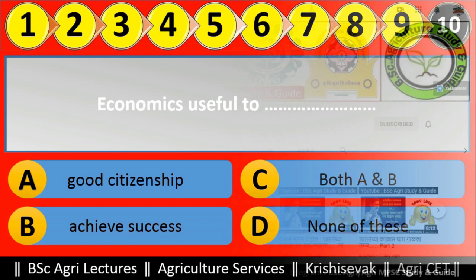Question number tenth and last: Economics is useful to dash dash. Options are: good citizenship, achieve success, both A and B, none of these. Economics is useful to good citizenship and also to achieve success. Hence the right answer is option C — both A and B.